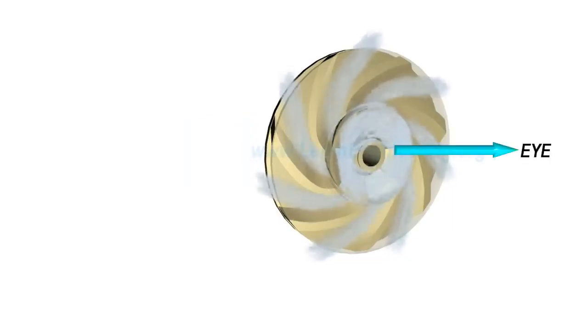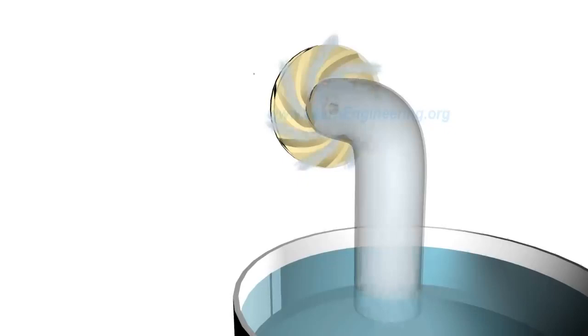At suction side, water is getting displaced so a negative pressure will be induced at eye. Such low pressure helps in sucking fresh water stream into the system again and this process continues. This is the reason why priming is important for centrifugal pumps. If no water is present initially, the negative pressure developed by rotating air at eye of impeller will be negligibly small to suck fresh stream of water.